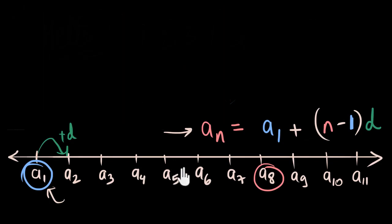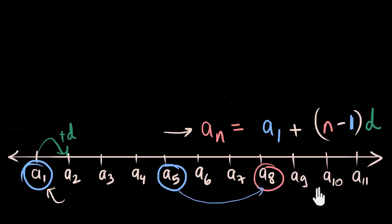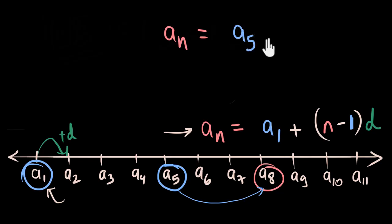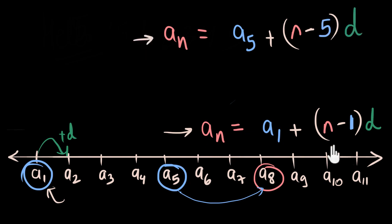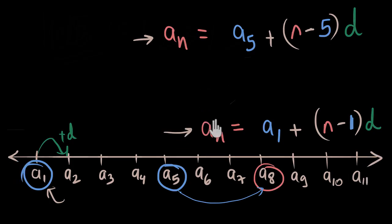But there's nothing special about starting from the first term. If we start with some other term, we get a new formula. For example, starting with A5: if n is 8, I take 3 jumps (8 minus 5); if n is 9, I take 4 jumps — it's always n minus 5. So the new formula is An = A5 + (n − 5) × D. This formula is just as valid as the textbook one. The formula you use isn't as important as knowing where it comes from. If you get a hang of this number line, you can create your own formulae — and frankly, this number line is much more powerful than any formula in this chapter.